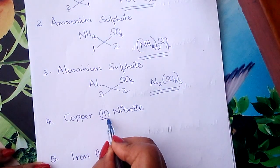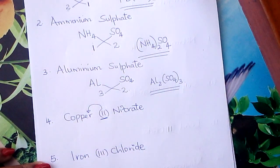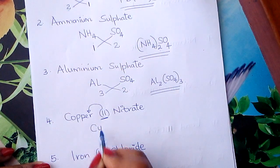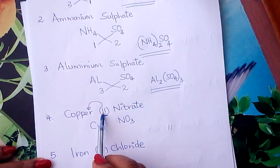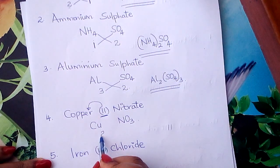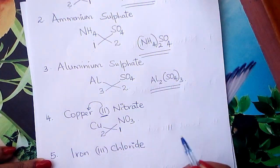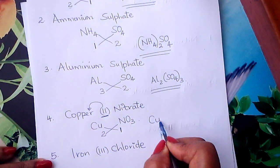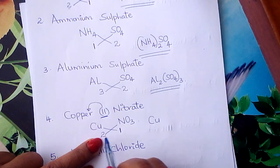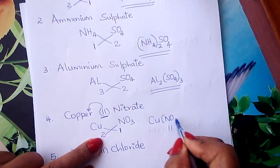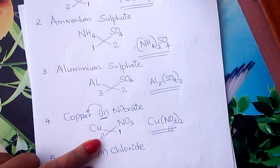Copper(II) nitrate — the II refers to the valency of the element that comes before it. Copper symbol is Cu. Nitrate is NO₃. Valency for copper is 2, valency for nitrate is 1. Interchange: copper takes 1, write it that way. Nitrate takes 2 — it takes more than 1 — so you put that radical inside a bracket and write 2: Cu(NO₃)₂. That is copper(II) nitrate.